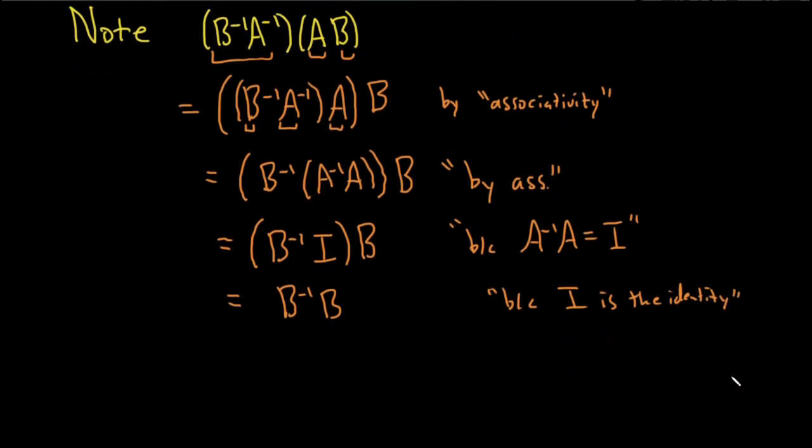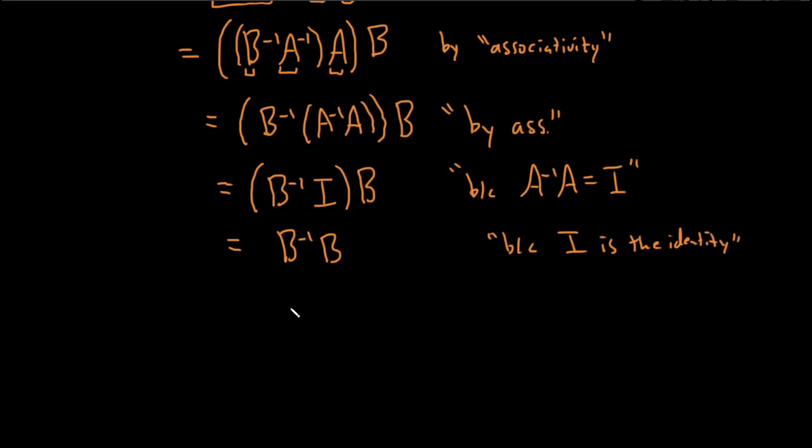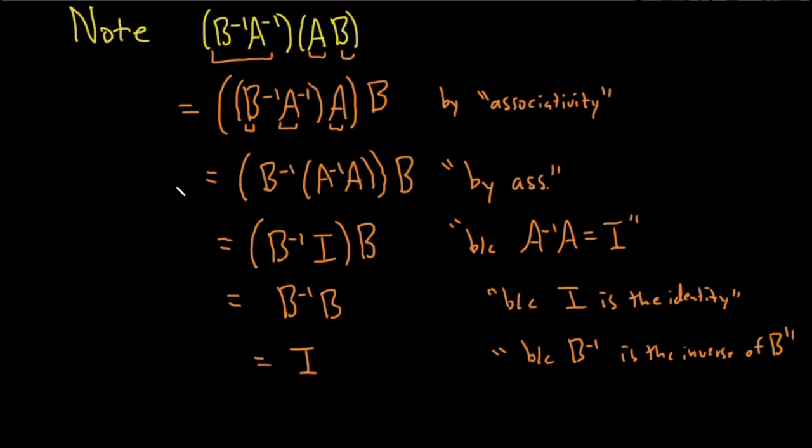And then B inverse times B, that's going to be just I. And again, this is just because it's true. So in other words, because B inverse is the inverse of B. I was lazy up here and didn't write it. I just wrote the equation. But yeah, so that shows one direction.